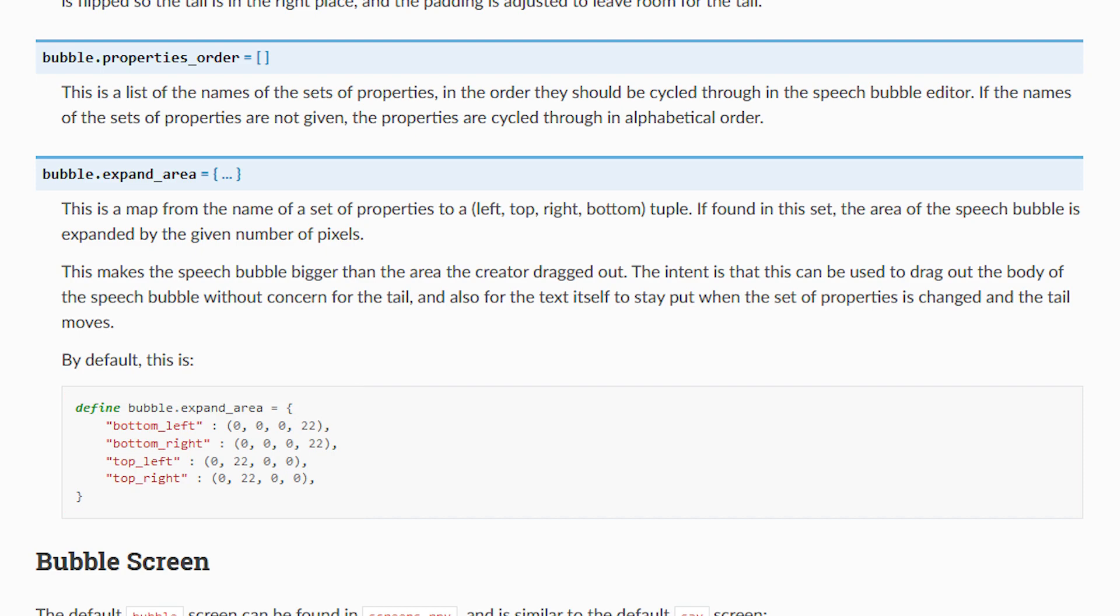As we can see in the documentation, the bottom left and bottom right bubbles expand an extra 22 pixels at the bottom by default, whereas the top left and top right bubbles expand 22 pixels at the top.